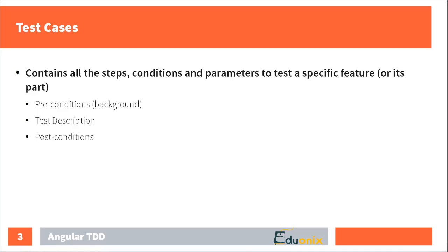The main thing that we are going to work on are test cases. A test case contains all the steps, all the conditions, and all the parameters to test some specific feature of our application, or maybe part of a specific feature. In our test cases we are going to have some background — some preconditions to bring our application to a desired state — and then we actually describe our test.